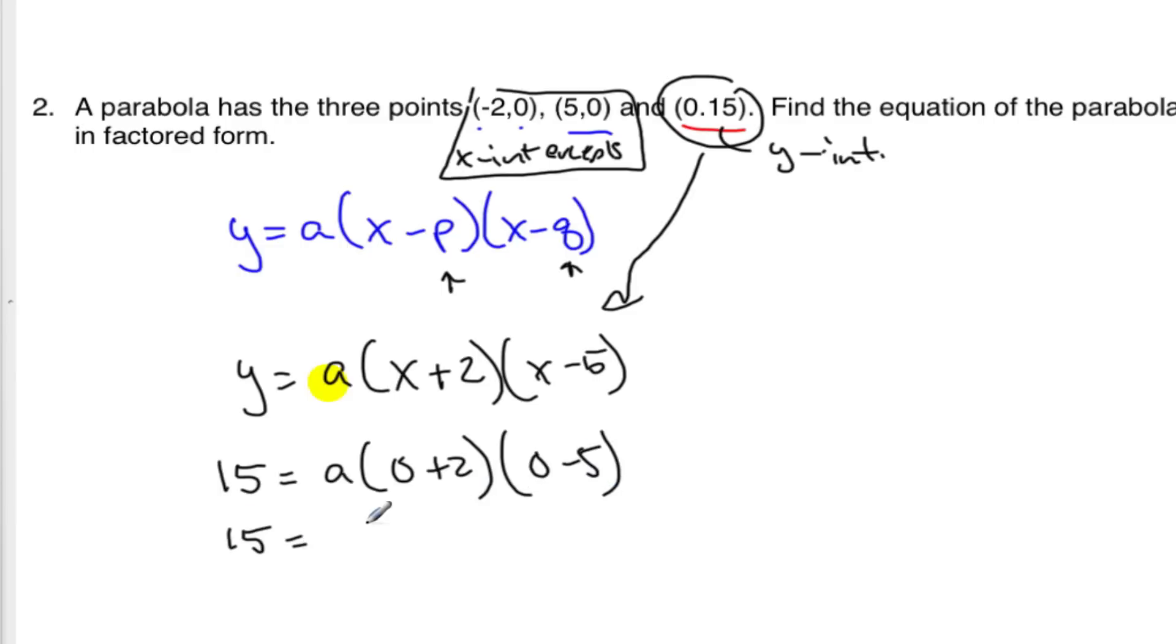And so 15 equals a. Well, this is 2 times negative 5. So it's 15 equals negative 10a.